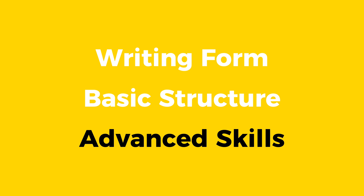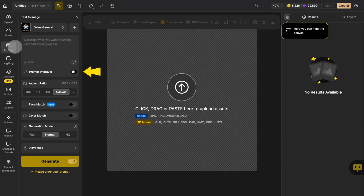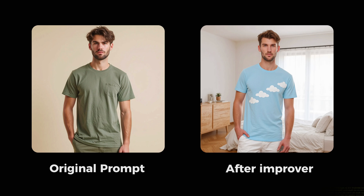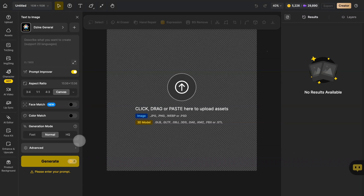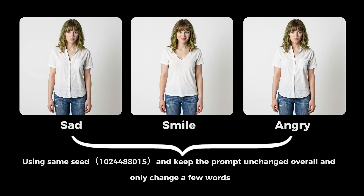You have now learned how to independently write a good prompt, but there are still some advanced techniques to learn. Prompt Improver is an exclusive AI polishing tool of design — it can help you refine your prompts and add more details to your images, making the images you generate more coherent. You can see that this man has changed into a short sleeve shirt with white clouds, and the background has been changed to a bedroom. This is seed: if you want to repeatedly generate similar images with the same person or object, you can input the same seed and make minor changes on the same image.